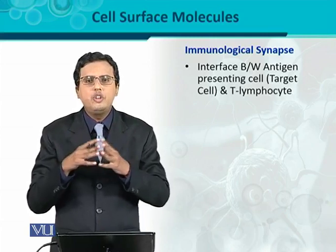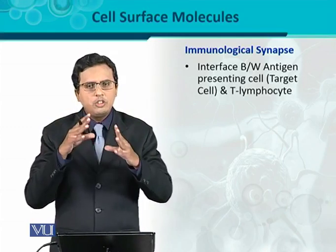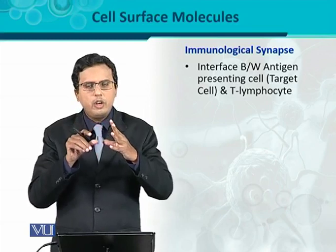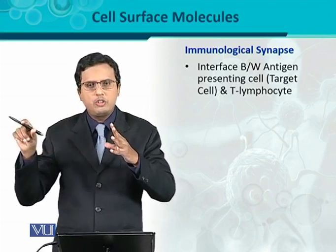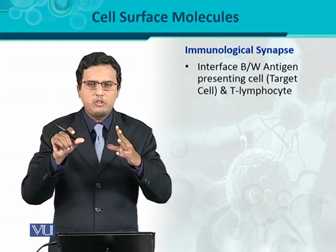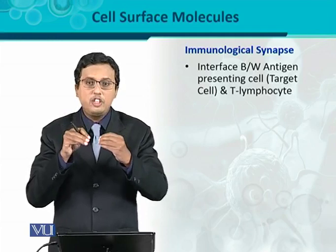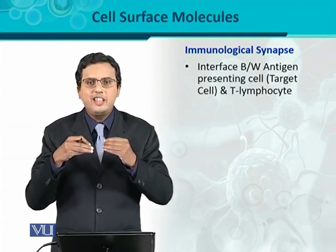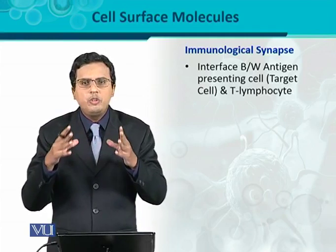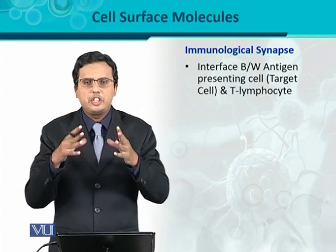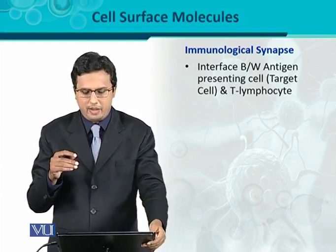It is just like the neurons in the brain. If you look at the structure of neurons, there is the cell body and the axons. When one axon meets another, they form a junction called the neurological synapse. Here, however, it is the immunological synapse — meaning these two immune cells are at the junction where signals are transmitted. That is why it is called the immunological synapse.